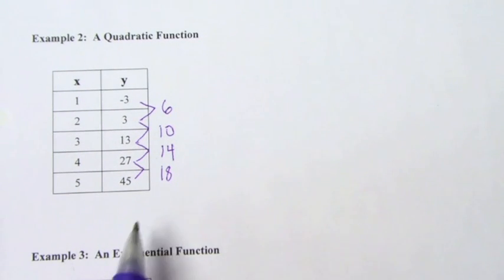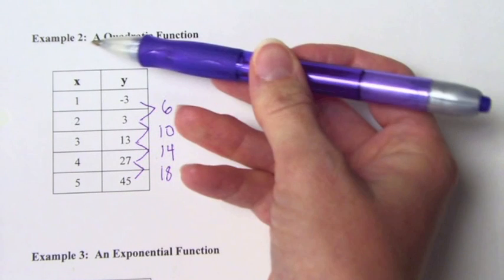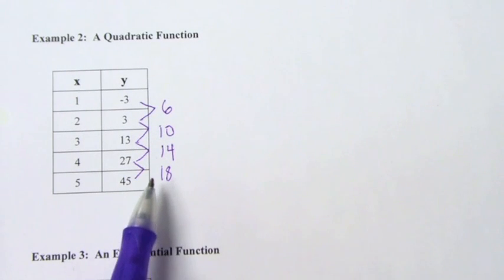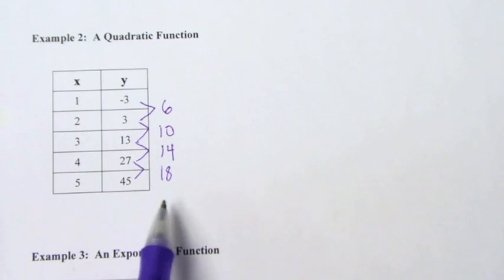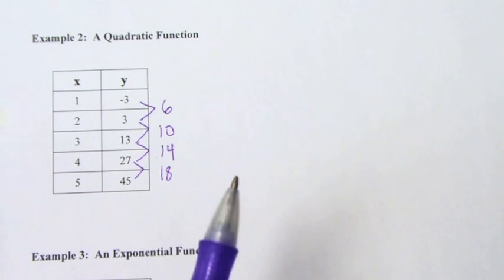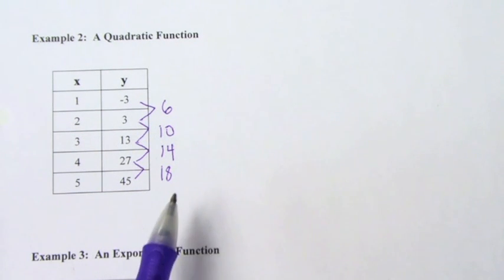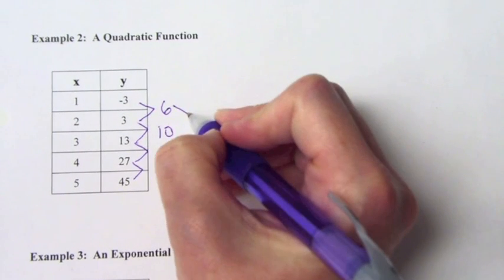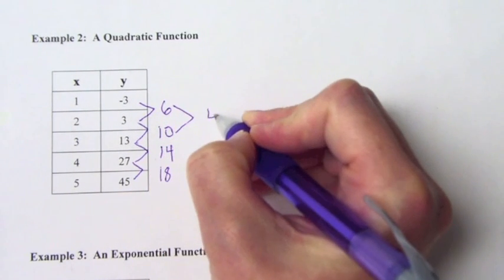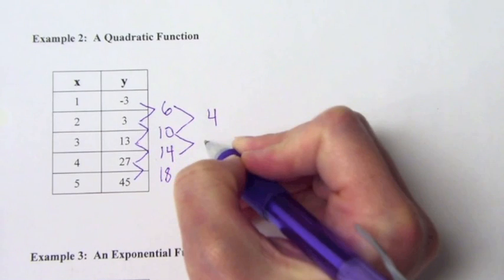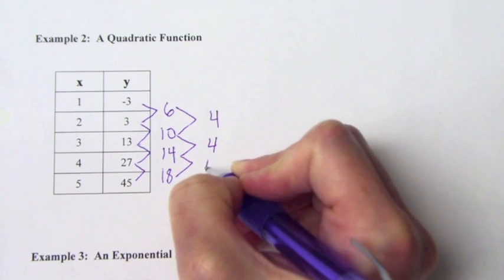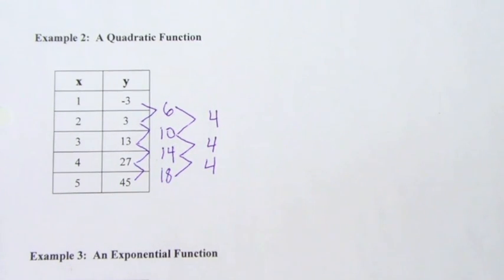So at this point, if we didn't know it was a quadratic, at this point we would check to see if it was linear. And if these were all the same, we would say oh it's linear. However, they're not the same. So what we're going to do is we're going to do that again. Because if the difference of the differences are the same, then it's quadratic. So we're going to do that again. So between 6 and 10, that's 4. Between 10 and 14, it's 4. And it's 4.